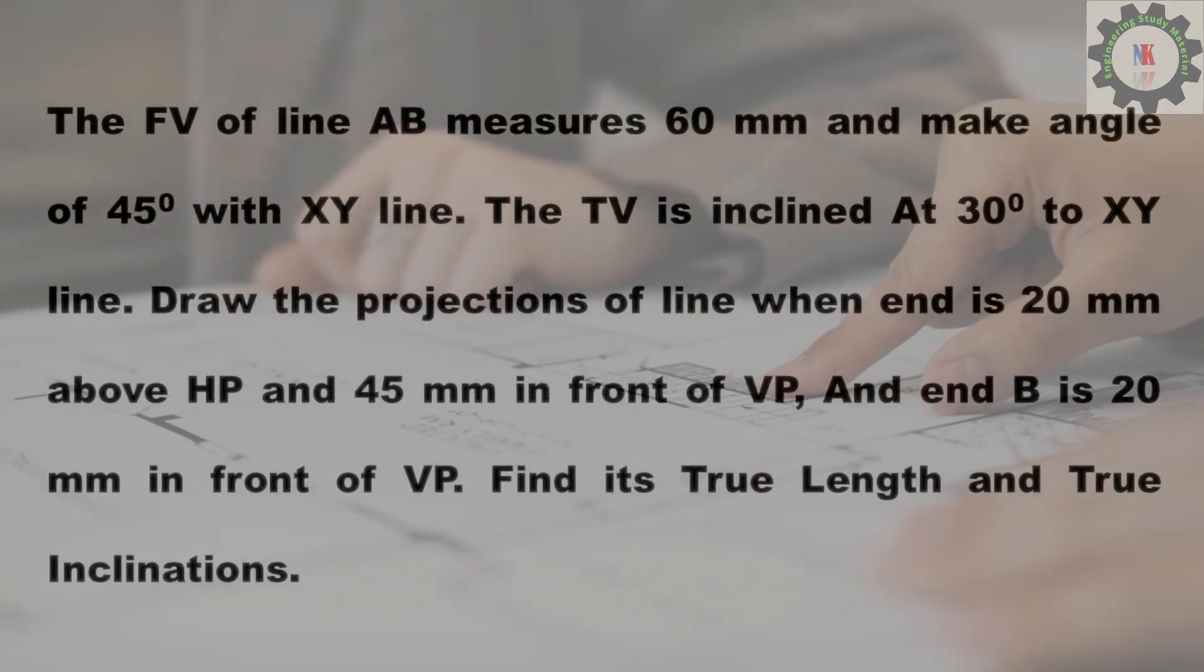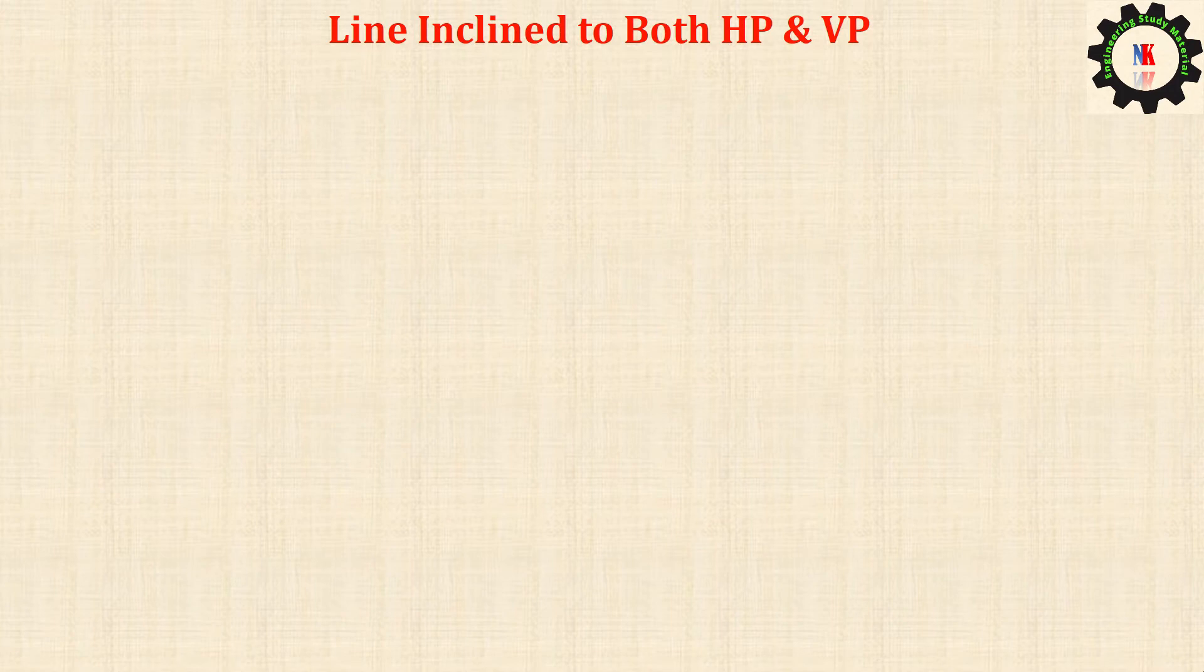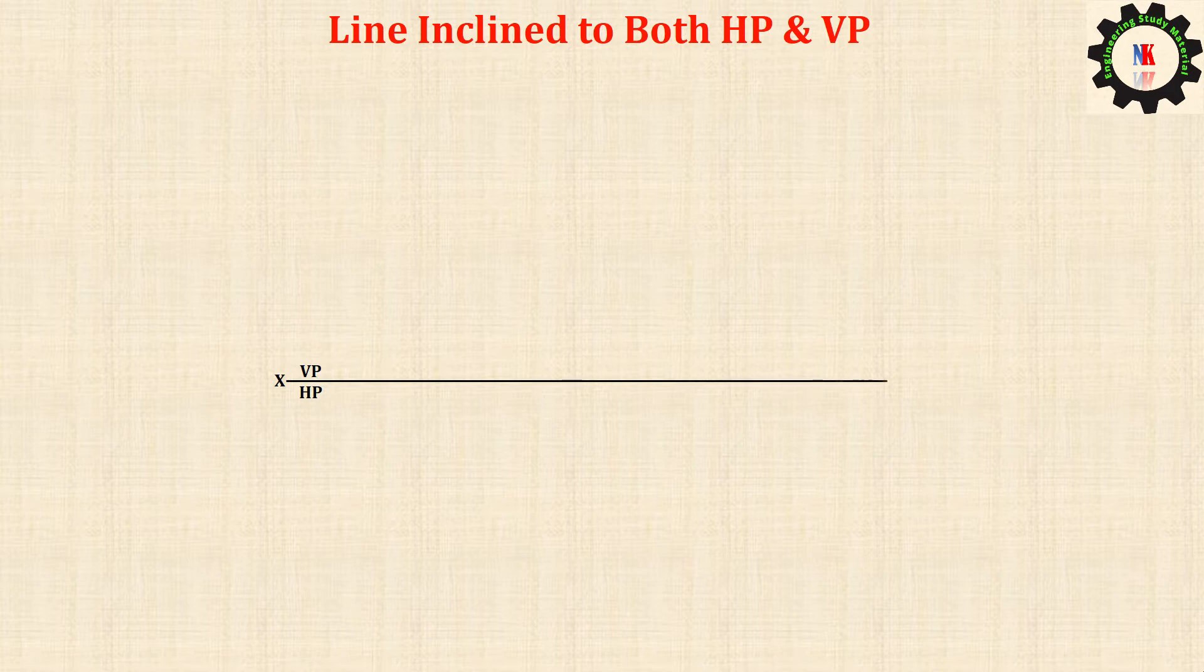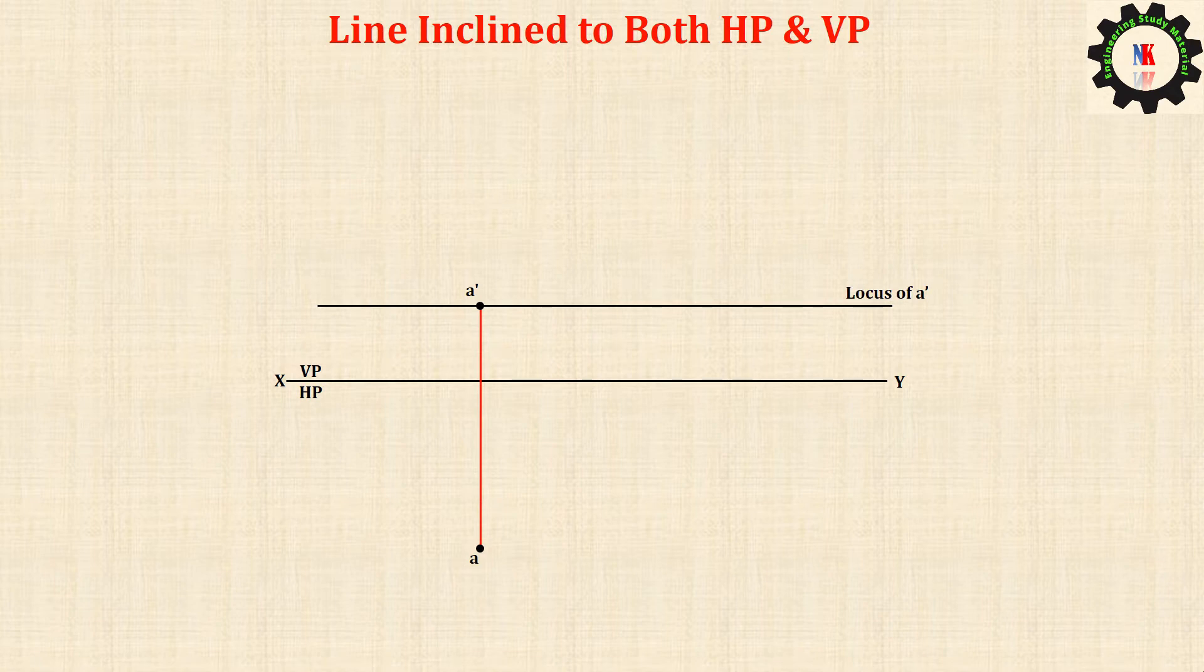Draw XY line, locate VP and HP. Locate a dash 20 millimeters above HP and a 45 millimeters in front of VP. Draw the locus line from a dash. Draw the locus line from a.